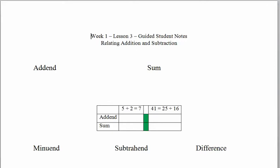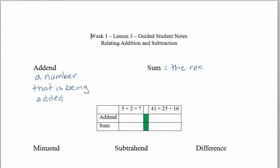So first let's start off talking about the different parts of an addition problem. In an addition problem we have an addend. Addends are a number that is being added, and the sum is the result after you add — it's the result of an addition problem.